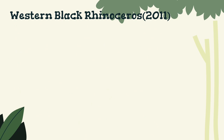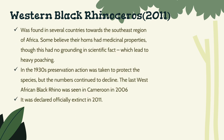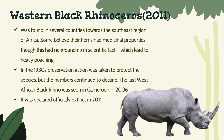Western Black Rhinoceros, in 2011. It was found in several countries towards the southeast region of Africa. Some believed their horns had medicinal properties, though this had no grounding in scientific fact, which led to heavy poaching. In the 1930s, preservation action was taken to protect the species, but the numbers continued to decline. The last West African black rhino was seen in Cameroon in 2006. It was declared officially extinct in 2011.